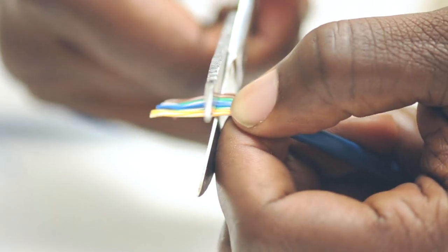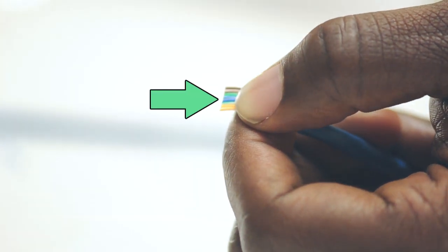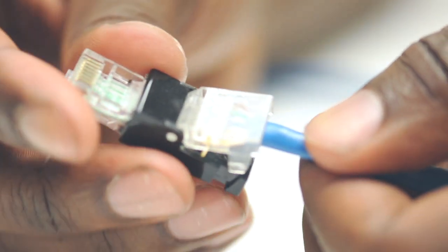Once your conductors are lined up and untwisted take your scissors and trim off the excess cable. Following the appropriate color code I insert the conductors into the plastic housing.